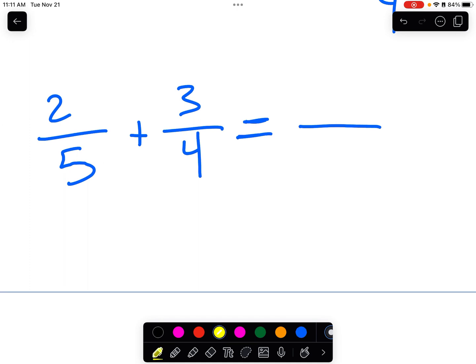The traditional way of doing this is you take 5 times 4 to get a common denominator. That's 20. Oopsies, I want to do that in blue. You multiply here. And then whatever you do to get the denominator.